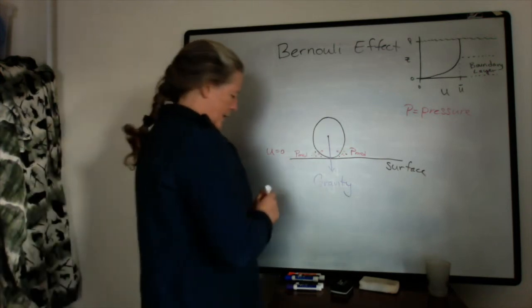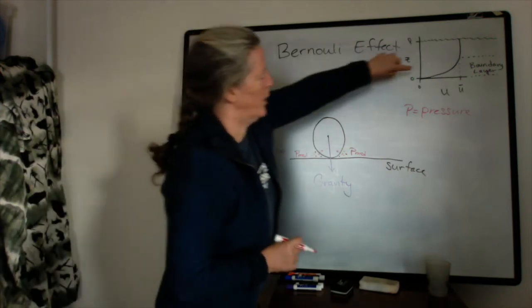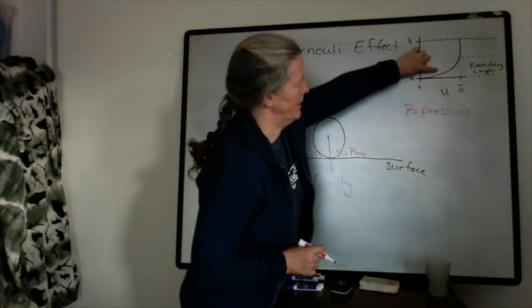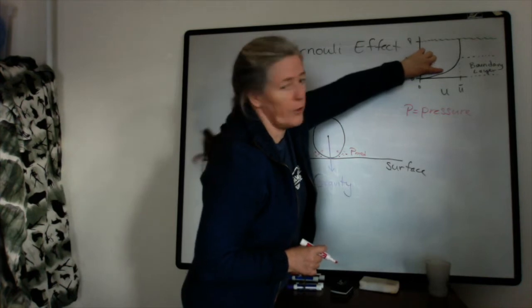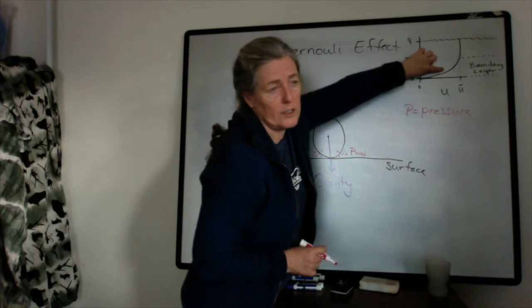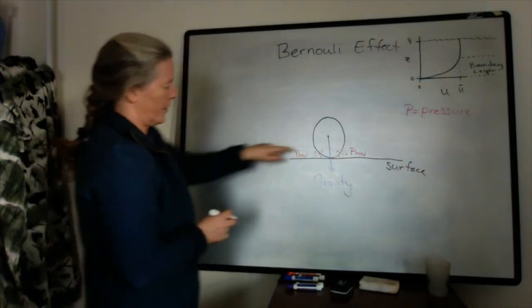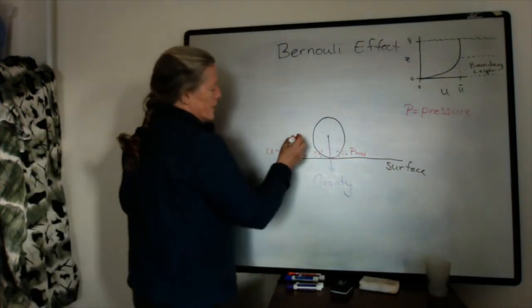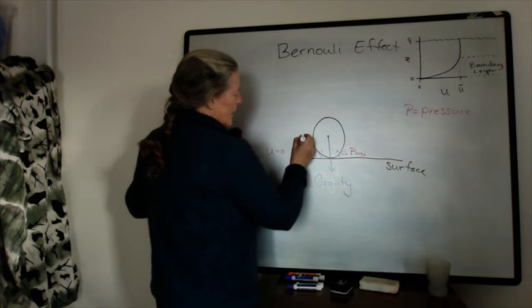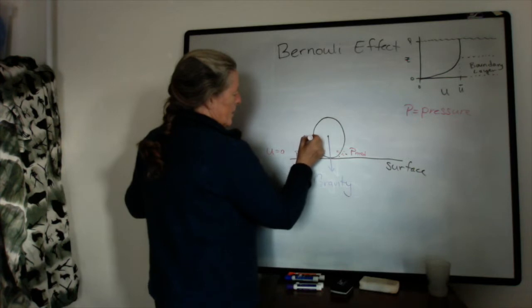So we'll say that our grain reaches somewhere up into the boundary layer, and the flow speed will be faster at the top of the grain than at the bottom of the grain. So here, I just showed the molecules jiggling, here, they're jiggling, but they're going downstream, right? And they're colliding with the grain,